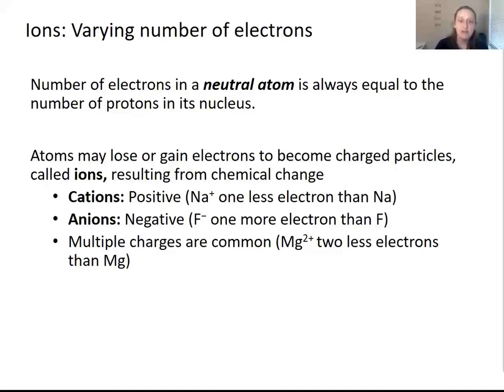In a neutral atom, the number of electrons is equal to the number of protons in the nucleus. However, atoms may lose or gain electrons to become charged particles. These charged particles are called ions and can result from chemical change. Ions are indicated by giving the chemical symbol of the corresponding atom, along with its explicit charge.